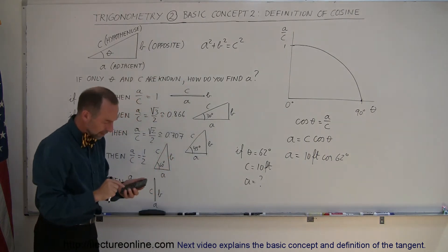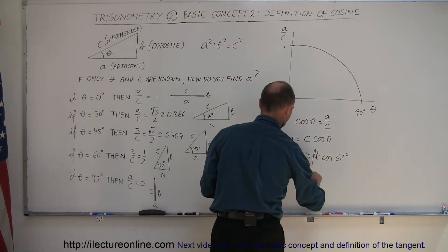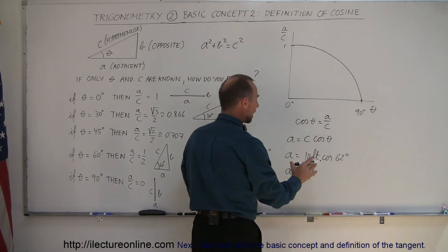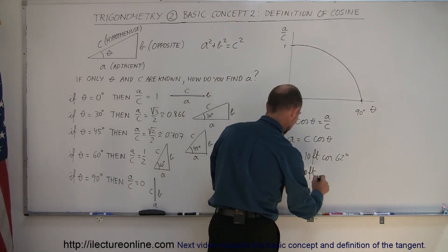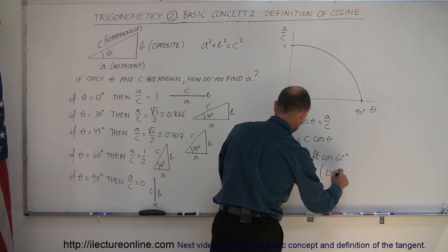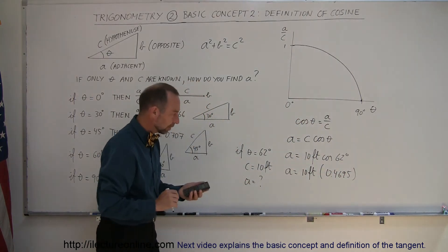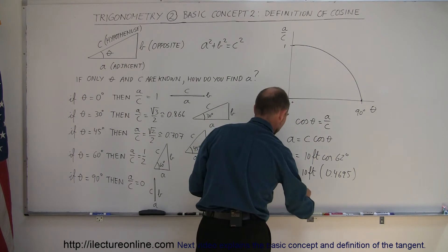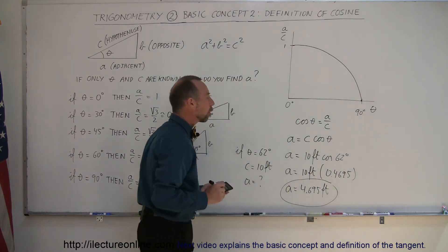Now, you take your calculator, you punch in 62, then you punch the button cosine, and out pops the number. So we have a is equal to 10 feet, and the calculator automatically calculates the ratio of a over c for an angle of 62 degrees, and it is 0.4695. And if you multiply that together, you get a is equal to 4.695 feet. And that's how you utilize the cosine function.